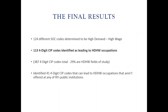To give you an idea of the final results, we identified 113 four-digit CIP codes that lead to high demand, high wage occupations as per our definition. As a side bonus, we also identified 41 four-digit CIP codes that weren't offered at all at any of our three public institutions.